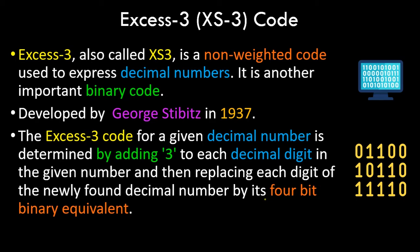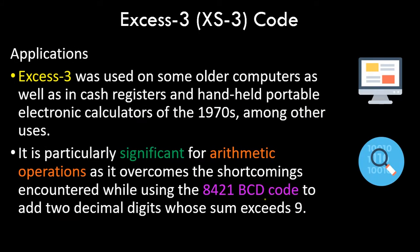That's why the name XS3 — because you add 3 to any digit and then convert it to the 4-bit binary equivalent. Regarding applications, XS3 was used on some older computers as well as in cache registers and handheld portable electronic calculators of the 1970s. It is particularly significant for arithmetic operations as it overcomes the shortcomings encountered while using the 8421 BCD code when adding two decimal digits whose sum exceeds 9.